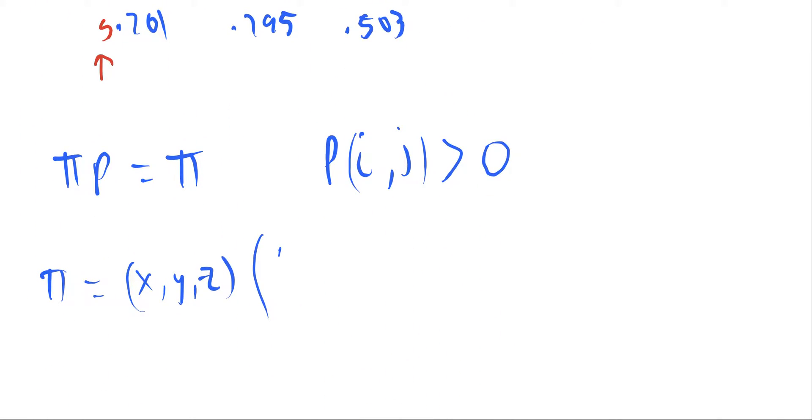And I'll just look at it here. It's 0.15, 0.6, 0.25, 0.4, 0.1, 0.5, 0.1, 0.3, 0.6. And this should equal x, y, and z.